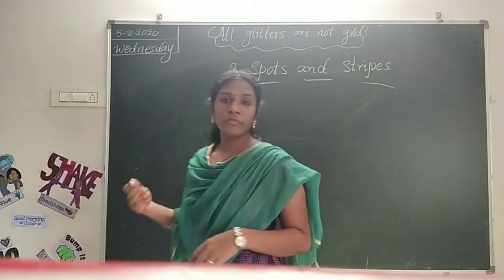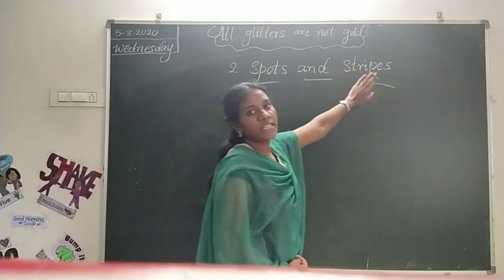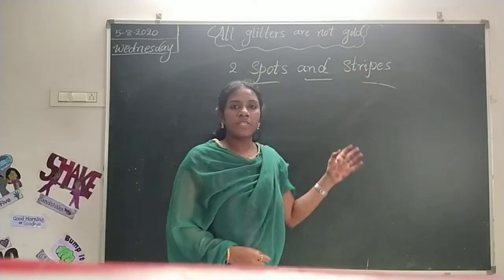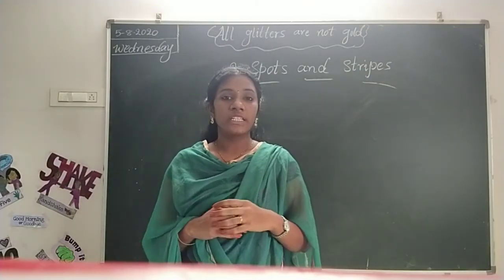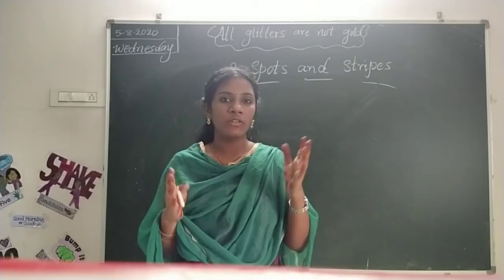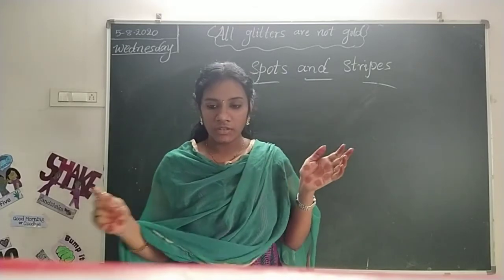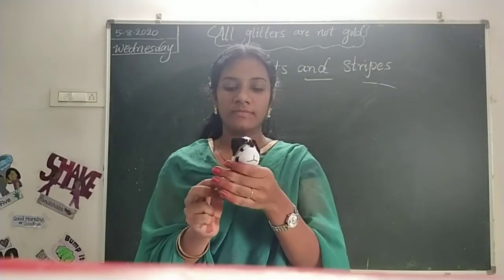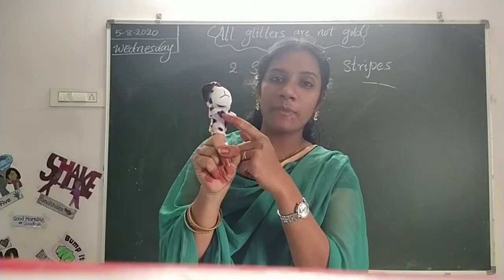Before going to the topic, we need to know what spots and stripes are. Do you observe that all animals in our surroundings are the same? No — there are different types of animals. Animals have so many differences. See, what is this animal? A puppy. It has spots.